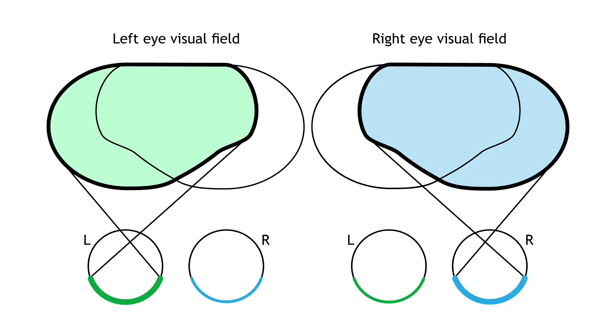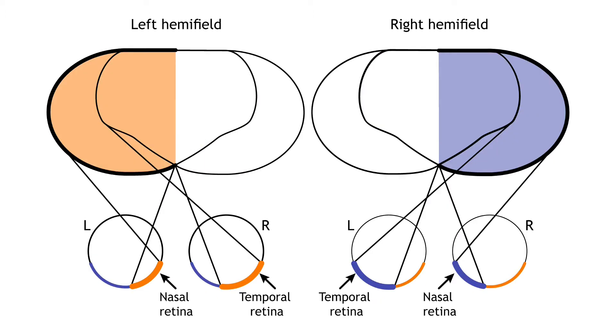The full visual field can be divided in a few ways. Each individual eye is capable of seeing a portion of, but not the entire visual field. The full visual field can also be divided into the right and left hemifields. The hemifields range from the most peripheral point to the center point, splitting the full visual field into two equal regions.